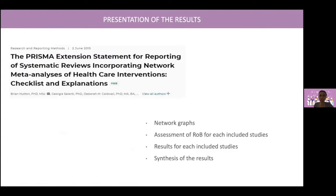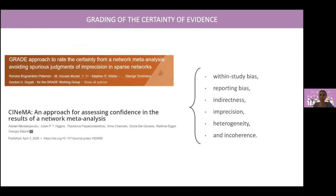When presenting your results, you could follow the PRISMA extension statement for reporting of systematic reviews incorporating network meta-analyses of healthcare interventions. This includes a network graph, assessment of risk of bias for each included study, results for each included study, and synthesis of the results. At the end of your network meta-analysis, you have to grade the certainty of evidence of your results, using approaches such as GRADE and CINeMA.